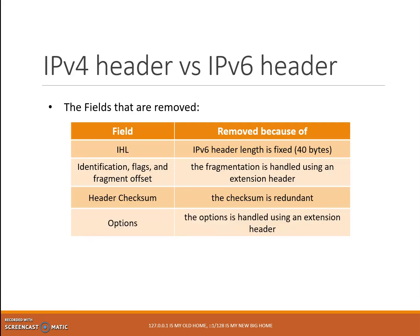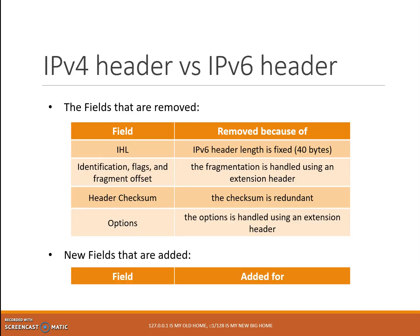Number 4: options. Options in IPv4 are now handled using extension headers in IPv6, so the options field is removed in IPv6. Next, we have new fields that are added, and we have only one new field: the flow label field. The flow label field is used to tag a flow of IPv6 packets in order to make the packets stay on the same path.